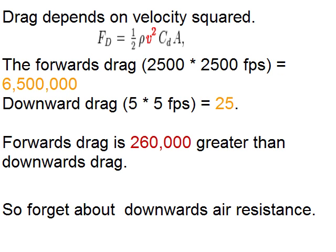Drag depends on velocity squared — there's a formula with V squared in it. The forward drag, at say 2,500 feet per second, squares to 65 million. The downward drag is 5 feet per second, which squares to just 25. So forward drag is about a quarter of a million times greater than downward drag. There is some downward drag, and streamlined things will fall very slightly faster, but it's a bit like spilling your drink on the Titanic — it doesn't make a lot of difference. We can forget about downward air resistance because the forward air resistance is so high.